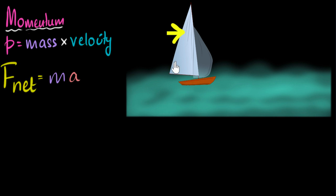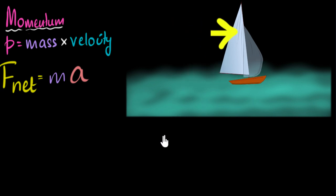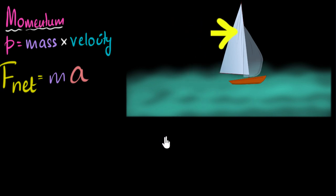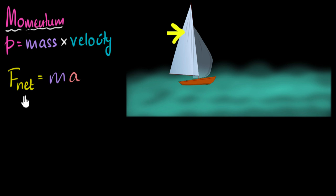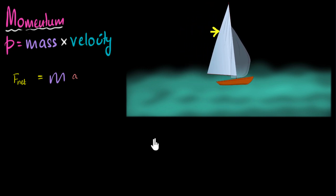The equation says it's this net force that's going to accelerate our boat — it's going to change the speed of our boat. This means if that net force is larger, our acceleration is going to be larger, and the boat is going to change its speed very quickly. On the other hand, if that net force is very small, then the acceleration would be very small, meaning the boat will change its velocity, but very slowly.